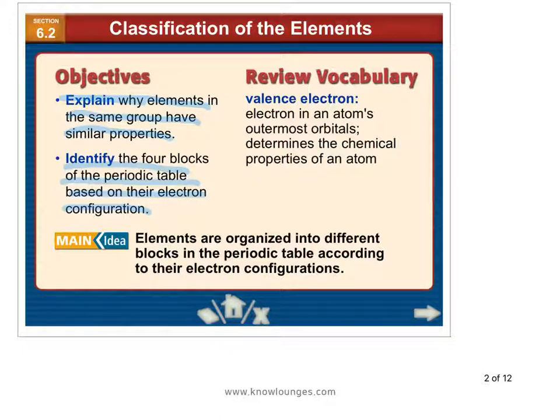Here we get some of the things that I explained a little bit about in chapter 5. Now textbooks get into these topics. Review vocabulary - make sure you understand what a valence electron is. Electrons in the atom's outermost orbitals determine the chemical properties.